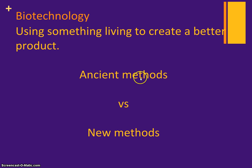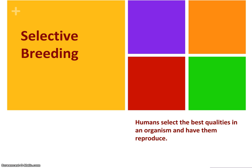There are ancient methods of doing this and there are newer methods. Right now we're going to talk about those ancient methods and later on in the week we'll talk about the new methods. This ancient method is called selective breeding. Humans select the best quality in an organism and have that organism reproduce — selecting the traits in an organism and then having that organism breed or reproduce and make more of itself.